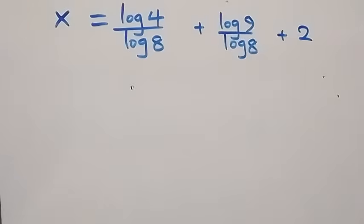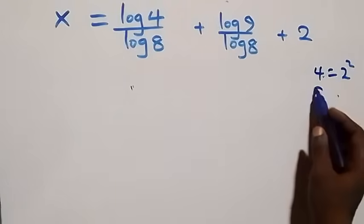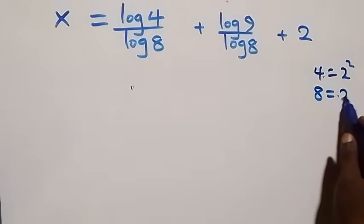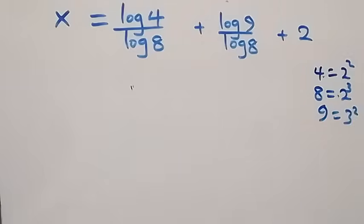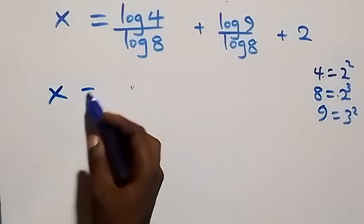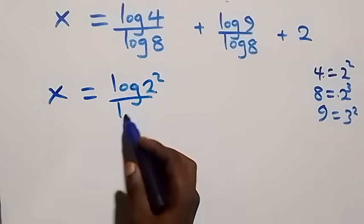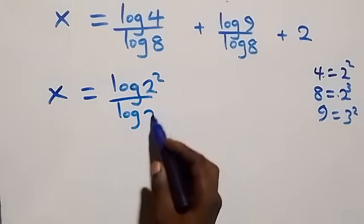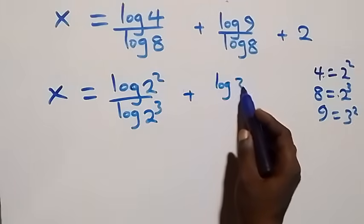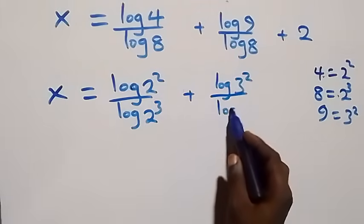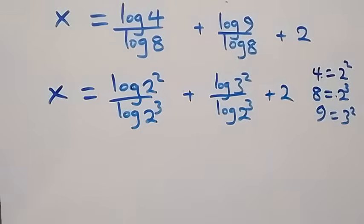We can rewrite 4 as 2 squared, 8 as 2 cubed, and 9 as 3 squared. So what we have becomes x equals log 2 squared over log 2 cubed, plus log 3 squared over log 2 cubed, plus 2.